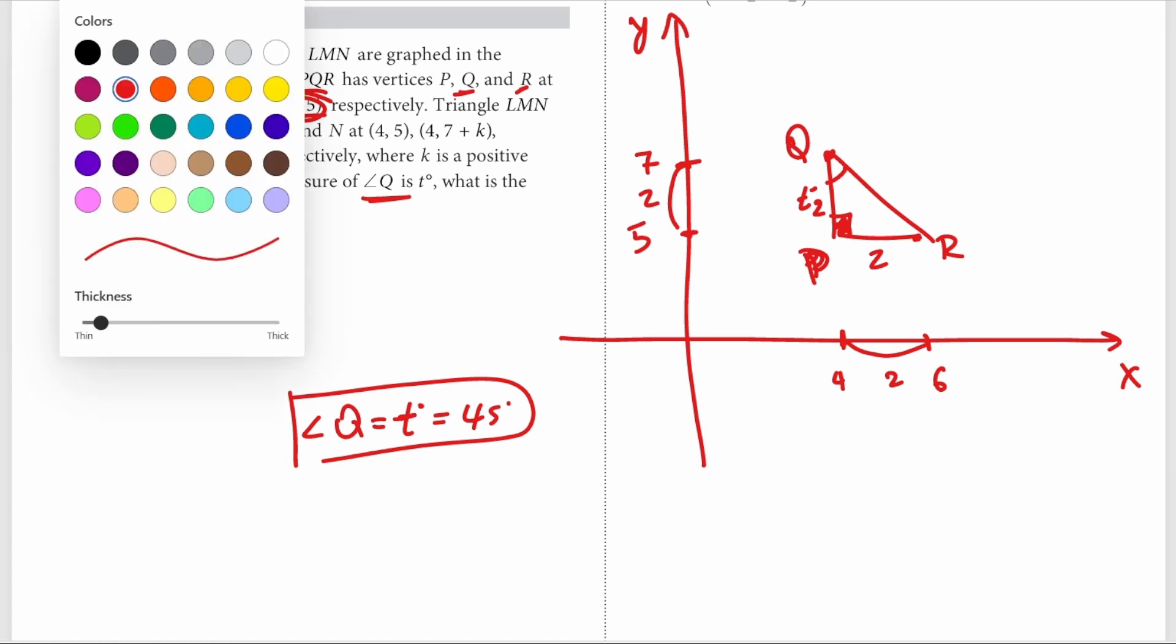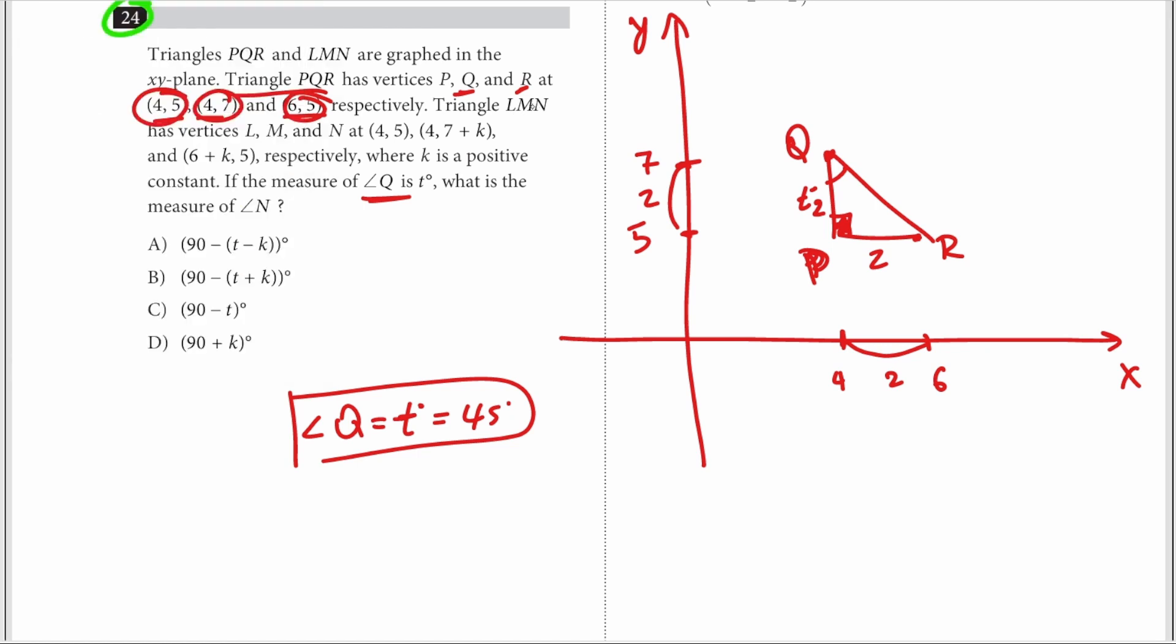Now what's happening is we have another triangle, LMN. Let me use a different color for that. So LMN. Now L is the same as N: 4,5, so you know this is also L. Now for M it's 4,7 plus k, so we add the k here and this is our M. Now this distance here therefore is 2 plus k, right? So this whole distance is 2 plus k.